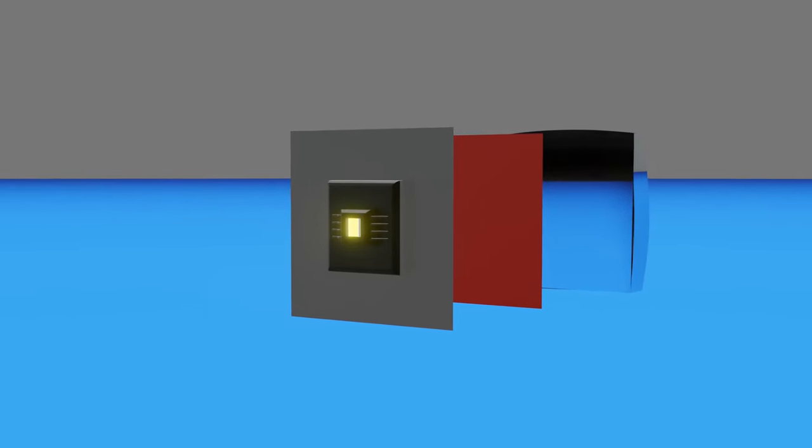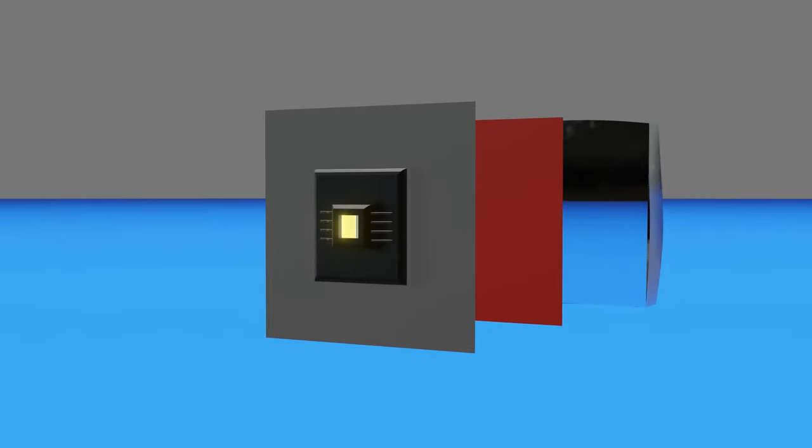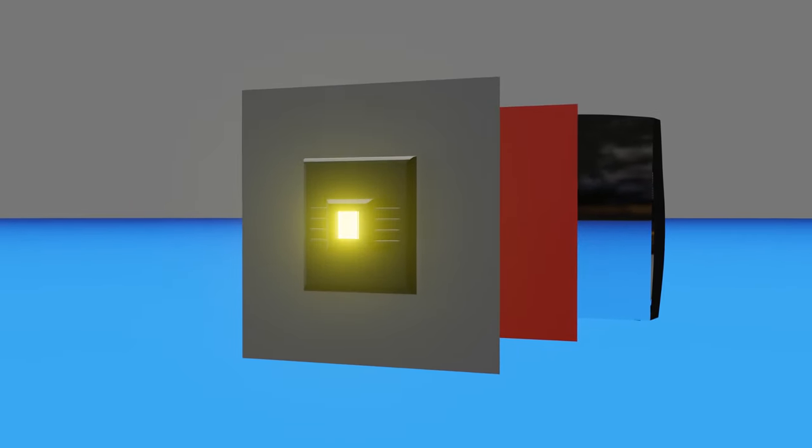Each pixel also has an amplifier, which takes the buildup charge and increases it. This amplification process is referred to as the ISO. The camera's processor will later read the charge to create the strength of that single pixel.